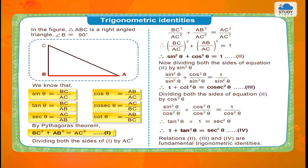By Pythagoras' theorem, BC² plus AB² is equal to AC². Equation 1.